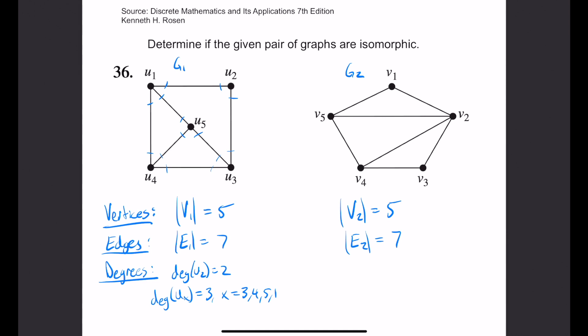Now we're going to check the degrees of graph 2. The degree of v1 is 2. The degree of v2 is 4. Just from there, we can tell that these two graphs are not isomorphic because G2 has a vertex with degree 4, whereas G1 does not. The degree of v2 equals 4.